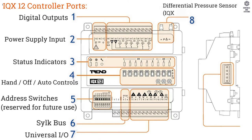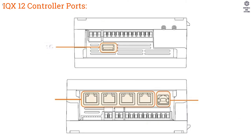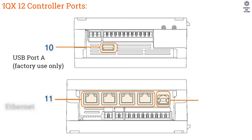8. Differential Pressure Sensor (IQX12P Only), 9. IO Expansion Bus, 10. USB Port A (Factory Use Only), 11. Ethernet Switch, 12. USB Port B.